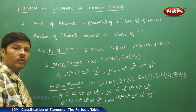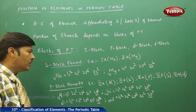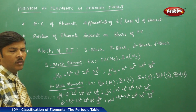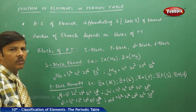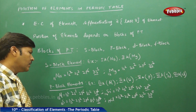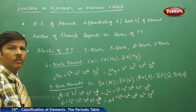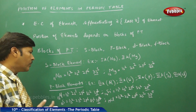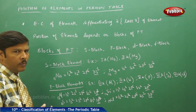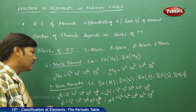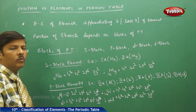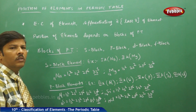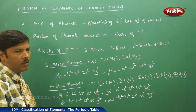The differentiating electrons — that is, the last electrons of each element — enter into their respective orbitals. Based on where the valence electron or differentiating electron enters its respective orbital, we can decide which group and block an element belongs to. These four elements belong to p-block elements because their differentiating electrons enter their respective atomic orbitals.